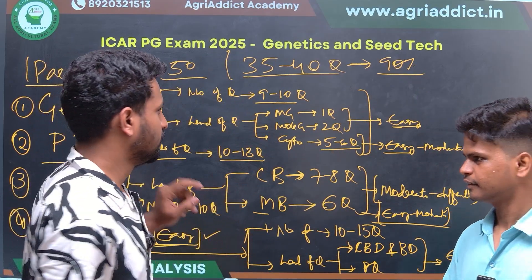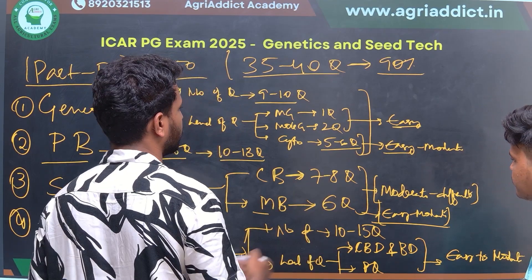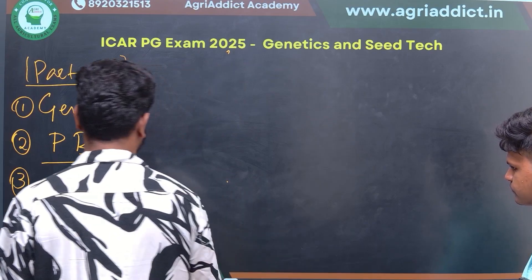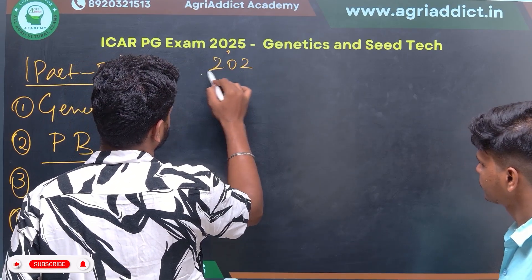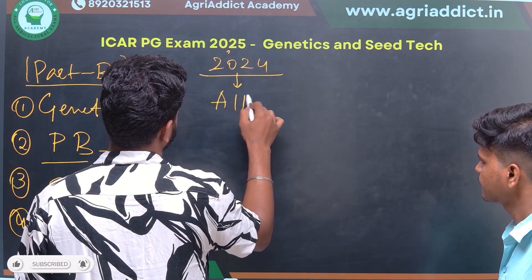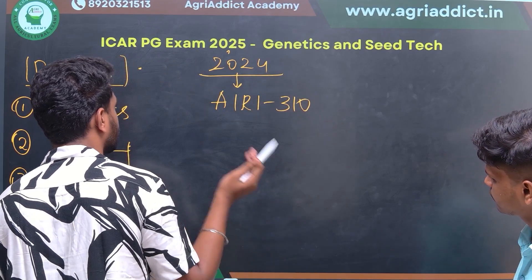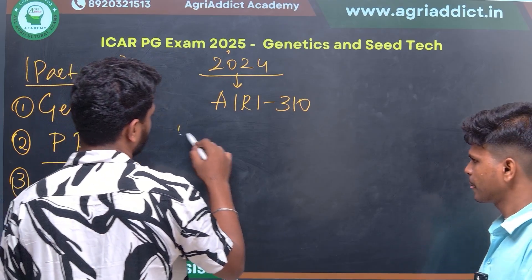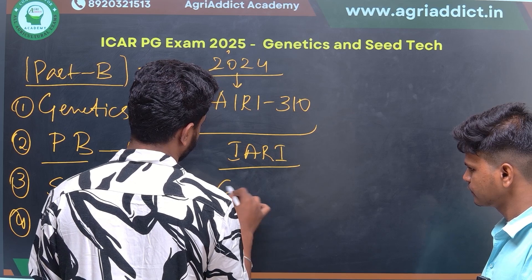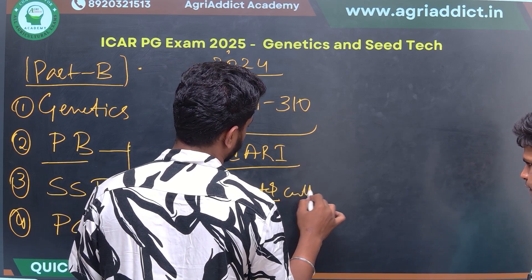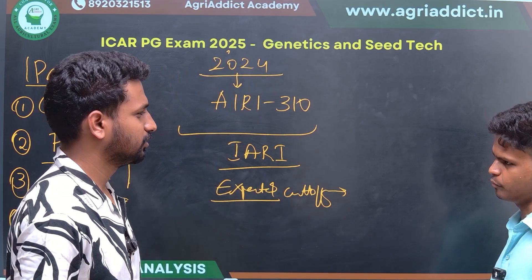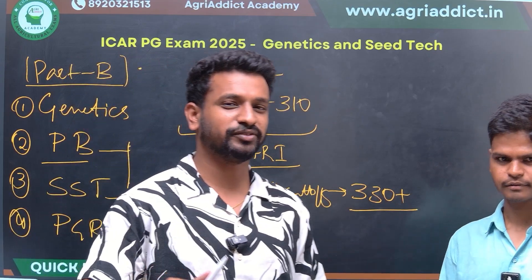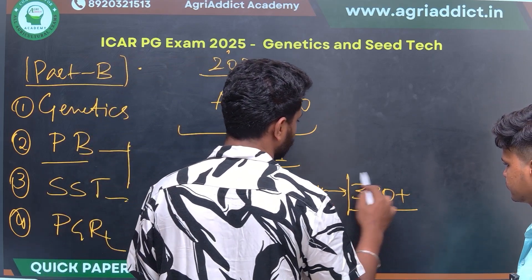Regarding previous year cutoffs for Seed Science: the first rank holder scored approximately 310 marks. For this year, the expected cutoff (highest score) is likely to be 330 plus. At IARI, there are approximately 6 to 7 seats available for Seed Science, so anyone scoring 270 to 280 plus can consider themselves to have a very good chance.